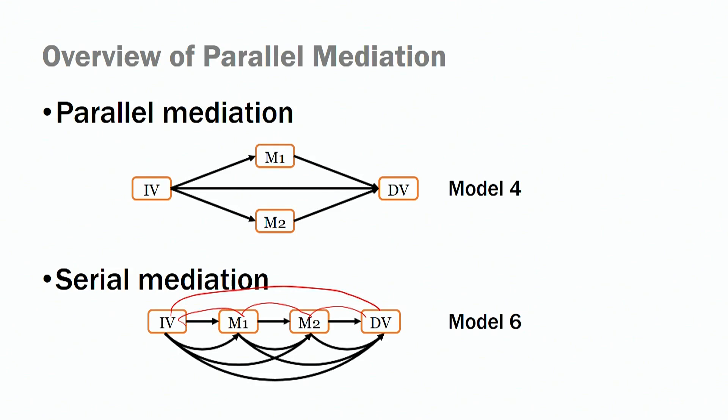There is one distal relationship between our independent variable and our dependent variable. The example I will use is similar to what I've been using so far: job meaningfulness influencing job performance. The first relationship we look at is job meaningfulness and job engagement. We theorize that job engagement influences job commitment, and then job commitment influences performance. The distinction between parallel and serial mediation should be made in your theory and theoretical development.